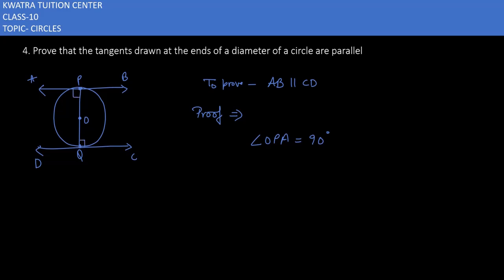So this angle will also be 90 degrees. In fact, angle OQC is 90 degrees. Why? Because there is a tangent, there is a radius, and the point of contact.